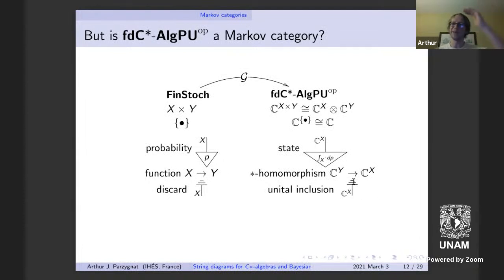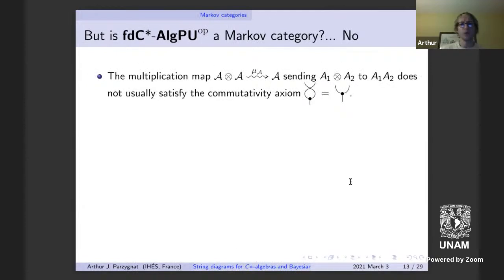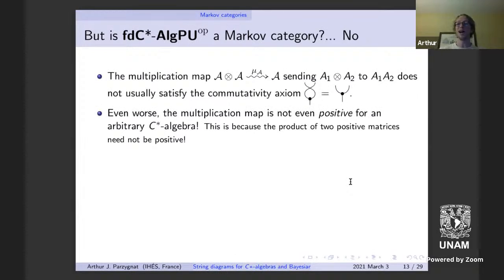The discard map gives a map from ℂ into C(X), and since all C*-algebras are unital, ℂ is an initial object. The copy map gets sent to the multiplication map — given two functions, multiply them to get a new function. But the multiplication map on arbitrary algebras does not satisfy the commutativity axiom. Even worse, the multiplication map is not even positive for an arbitrary C*-algebra, because the product of two positive matrices need not be positive.